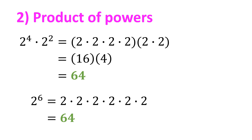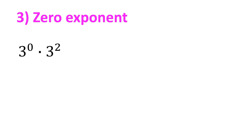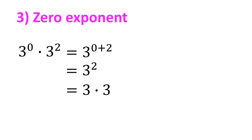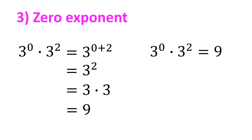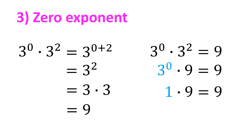Using the property of product of powers, we can now define the meaning of zero exponent. Let's say we have 3 raised to 0 times 3 squared. By the product of powers property, this equals 3 raised to 0 plus 2, which is 3 squared, and 3 times 3 is 9. So 3 raised to 0 times 9 equals 9. For this equation to be true, 3 raised to 0 must equal 1, because any number multiplied by 1 equals the number itself. So therefore, 3 raised to 0 must be equal to 1.